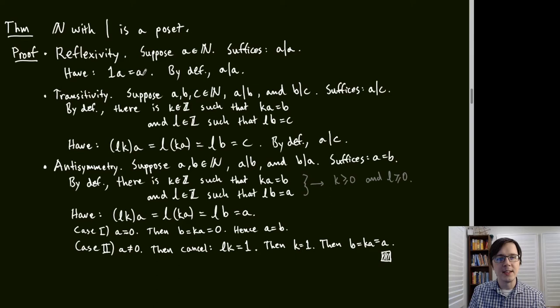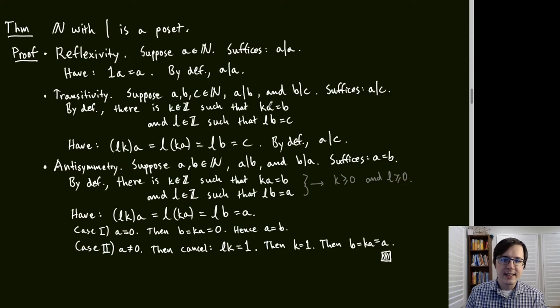Transitivity: given A | B and B | C, we want A | C. By definition there are integers K and L such that KA = B and LB = C. Then (LK)A = L(KA) = LB = C, so by definition A | C.